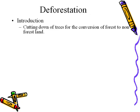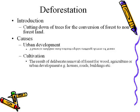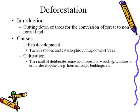Now, what is deforestation? It is the cutting down of trees for the conversion of forest to non-forest land. The first cause is urban development — sometimes there is slow forest degradation, and sometimes there is sudden cutting of trees for urban development. The second cause is cultivation. Deforestation may be the result of deliberate removal of forest for wood, agriculture, or urban development, for example houses, roads, and buildings.